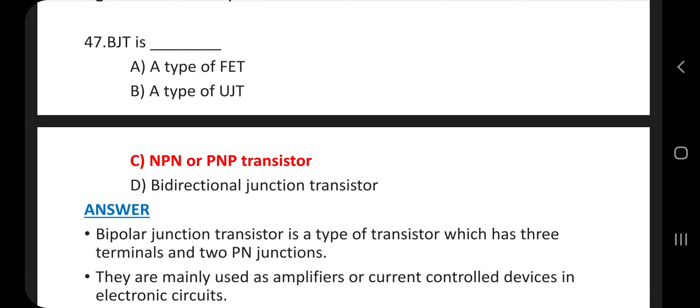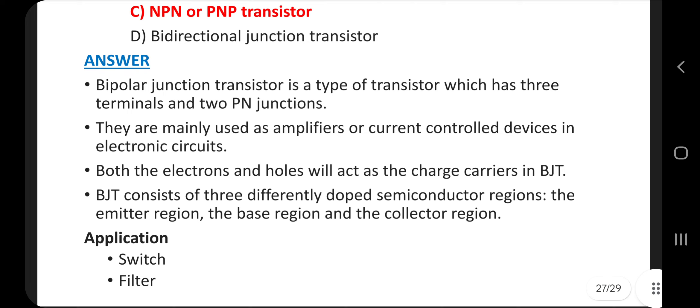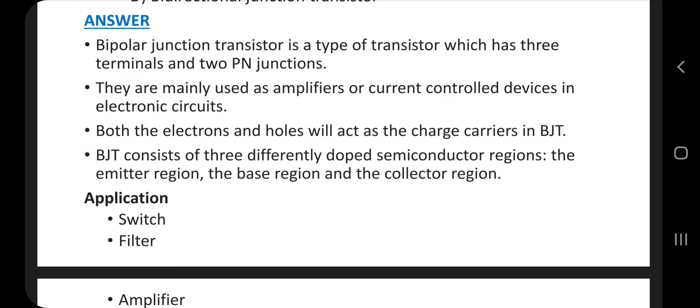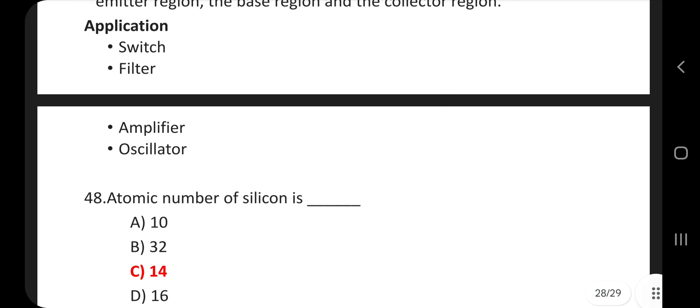Question number 47. BJT is, answer is option C, NPN or PNP transistor. BJT, bipolar junction transistor, is a type of transistor which has three terminals and two PN junctions. They are mainly used as amplifiers or current control devices in electronic circuits. Both the electrons and holes will act as the charge carriers in BJT. BJT consists of three differently doped semiconductor regions: the emitter region, the base region, and the collector region. Application: switcher, filter, amplifier, and oscillator.